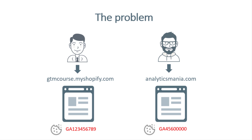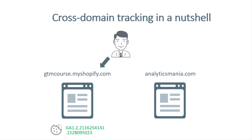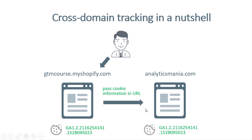Thanks to cross domain tracking configuration, it is possible to solve this problem. Here's how it works in a nutshell: a visitor lands on the first website and a cookie is stored. When the visitor clicks a link that redirects to the second website, the URL will be automatically decorated with some cookie information. Then on the second website, Google Analytics will take that information from the URL and automatically update the cookie. As a result, the same visitor on both websites will have the same cookie value.